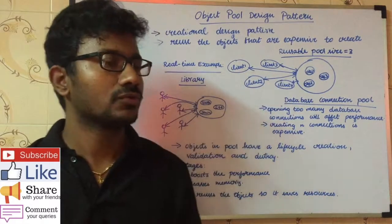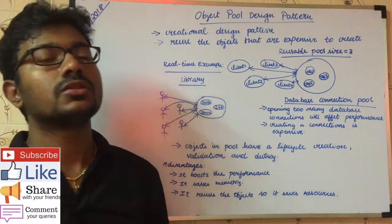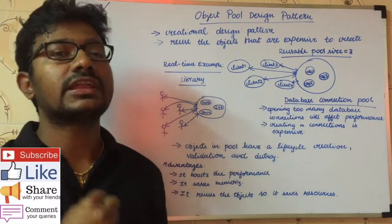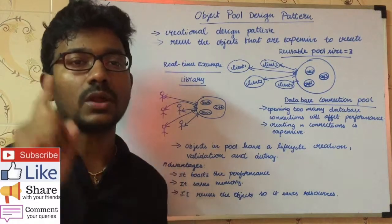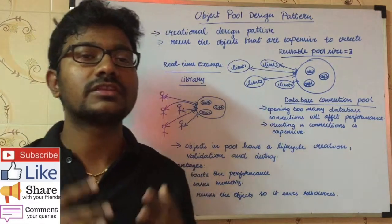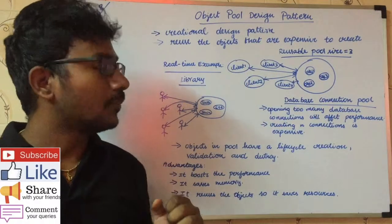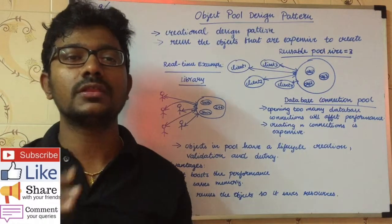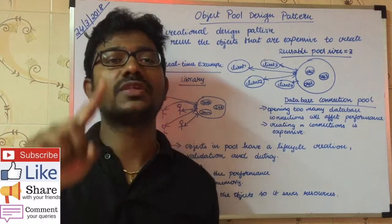The real-time Java example where the object pool design pattern is useful: suppose there are a thousand clients all trying to create a database connection. Creating even one database connection is a very expensive object because it involves many resources. If a thousand clients are each creating this same kind of object, the cost would be a thousand times over.